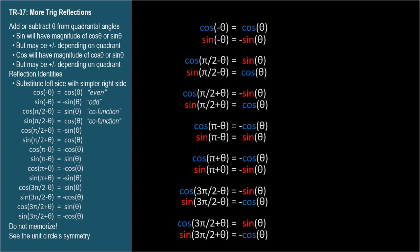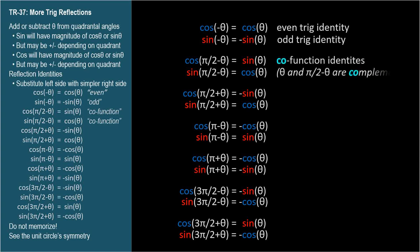The first two are called even/odd identities. The next two are called cofunction identities. The other 10 don't have special names that I'm aware of, but they're all the result of unit circle symmetry.